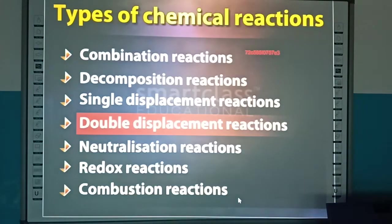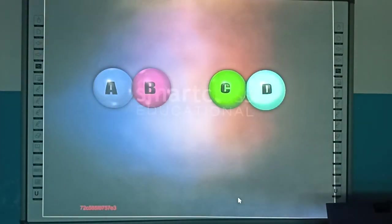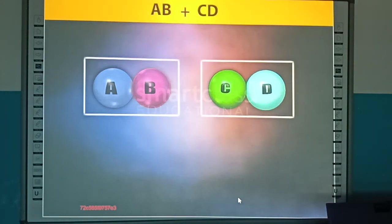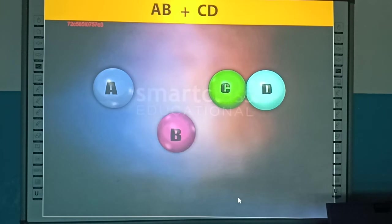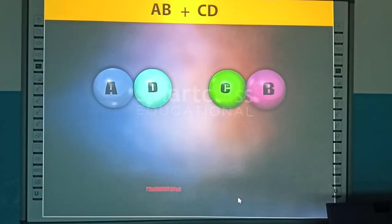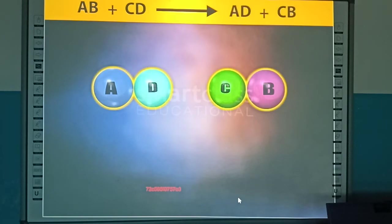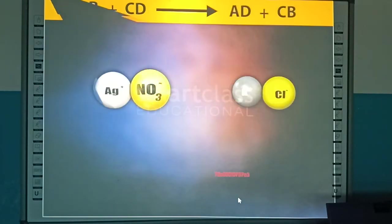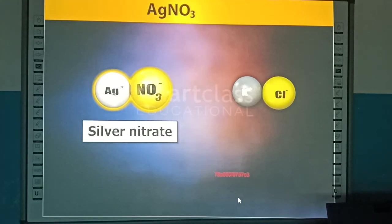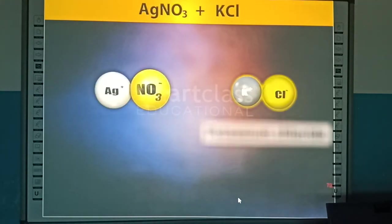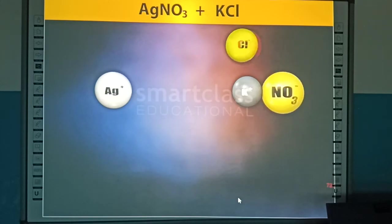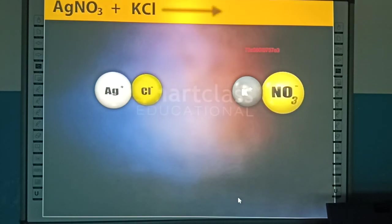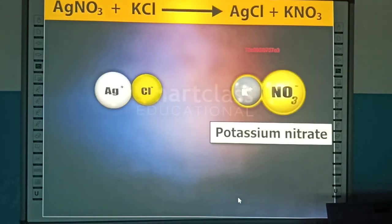Double displacement reactions are chemical reactions in which two compounds exchange their constituents, mostly ions, to form new compounds. For example, silver nitrate and potassium chloride mutually exchange their constituent ions to form silver chloride and potassium nitrate.